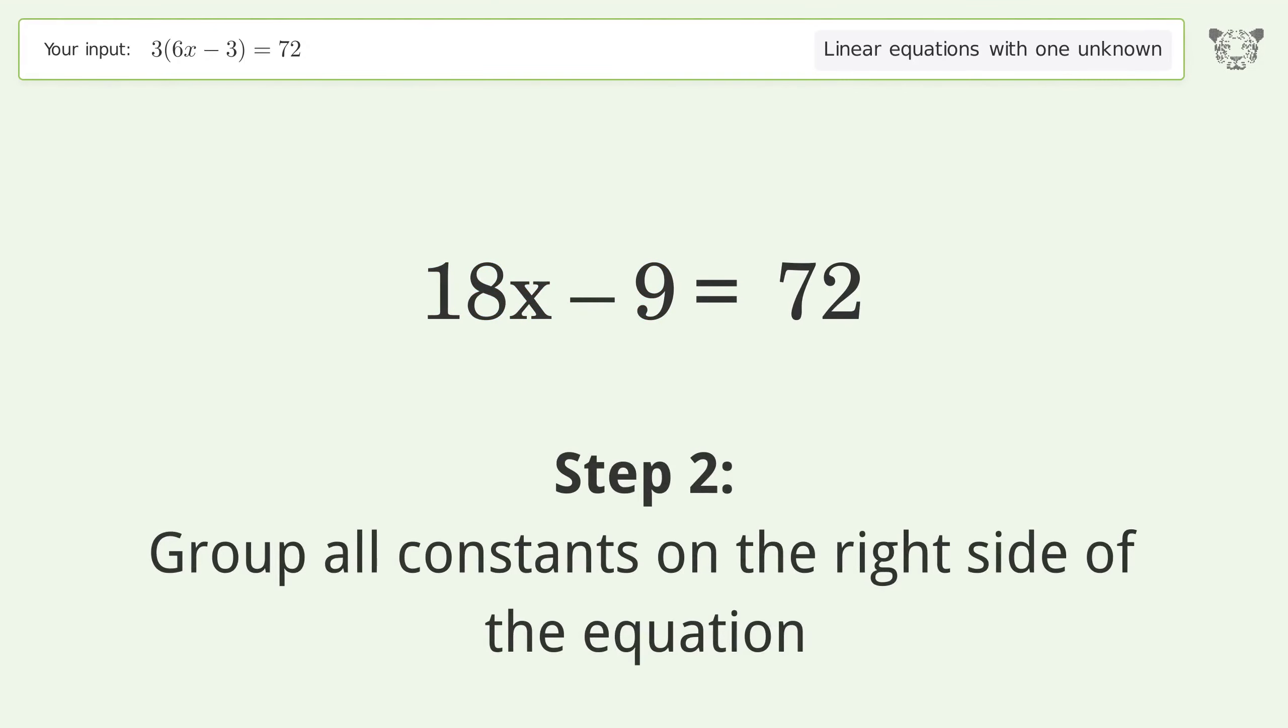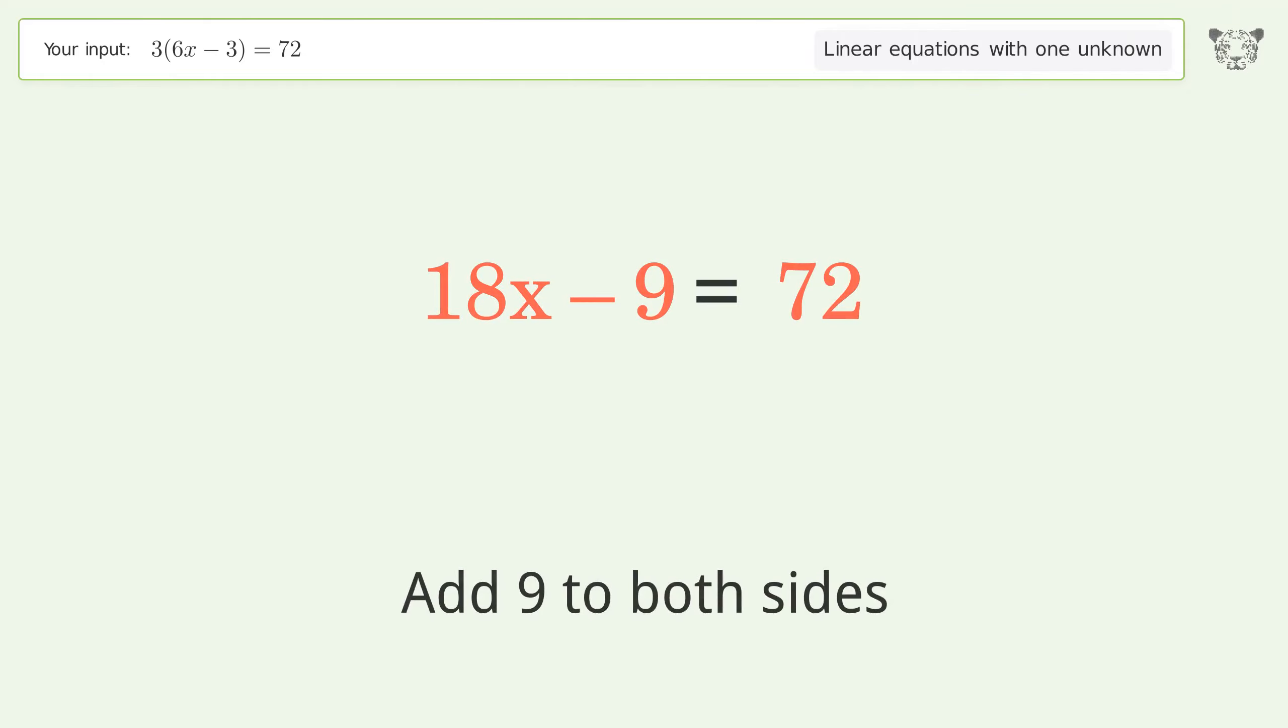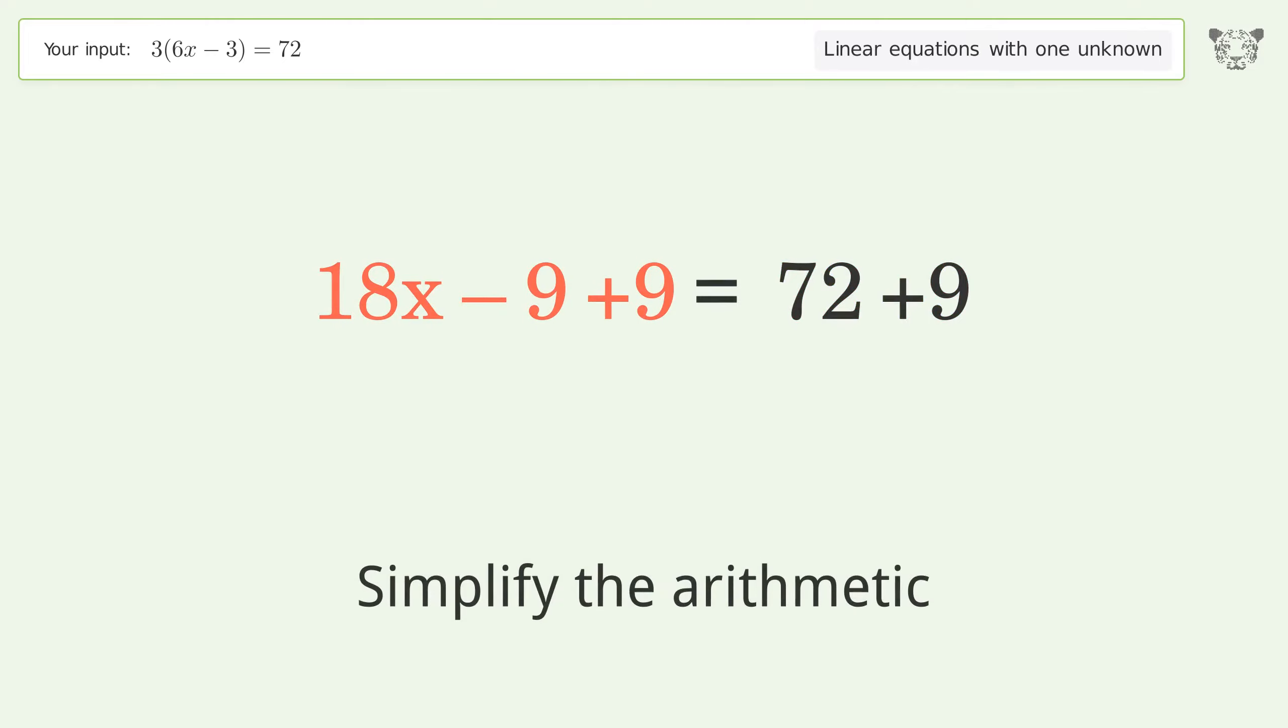Group all constants on the right side of the equation. Add 9 to both sides. Simplify the arithmetic.